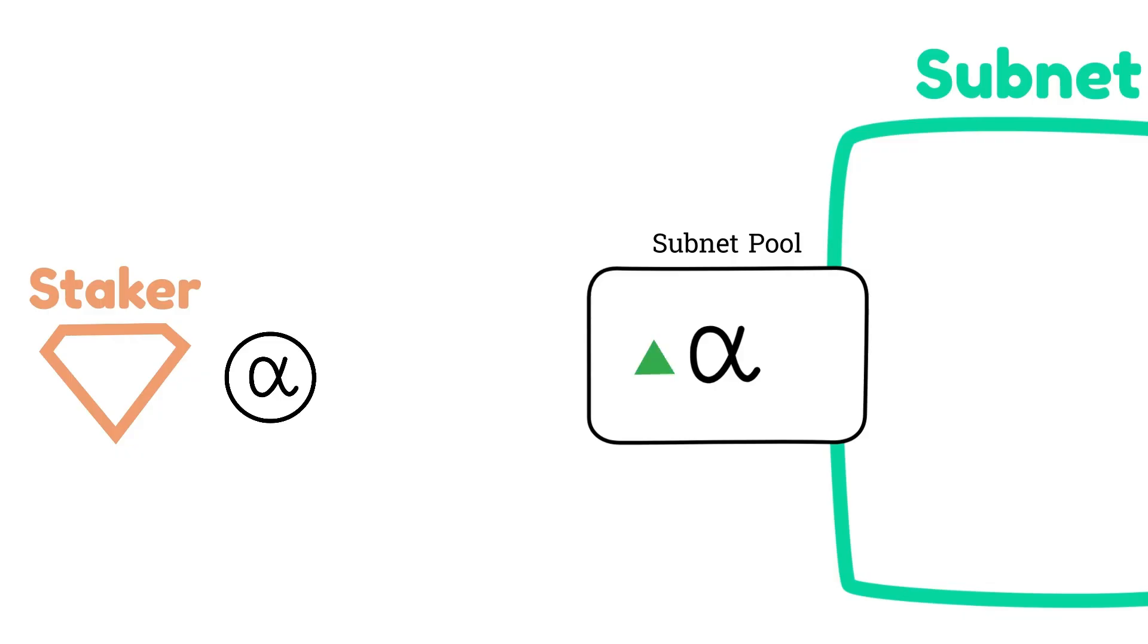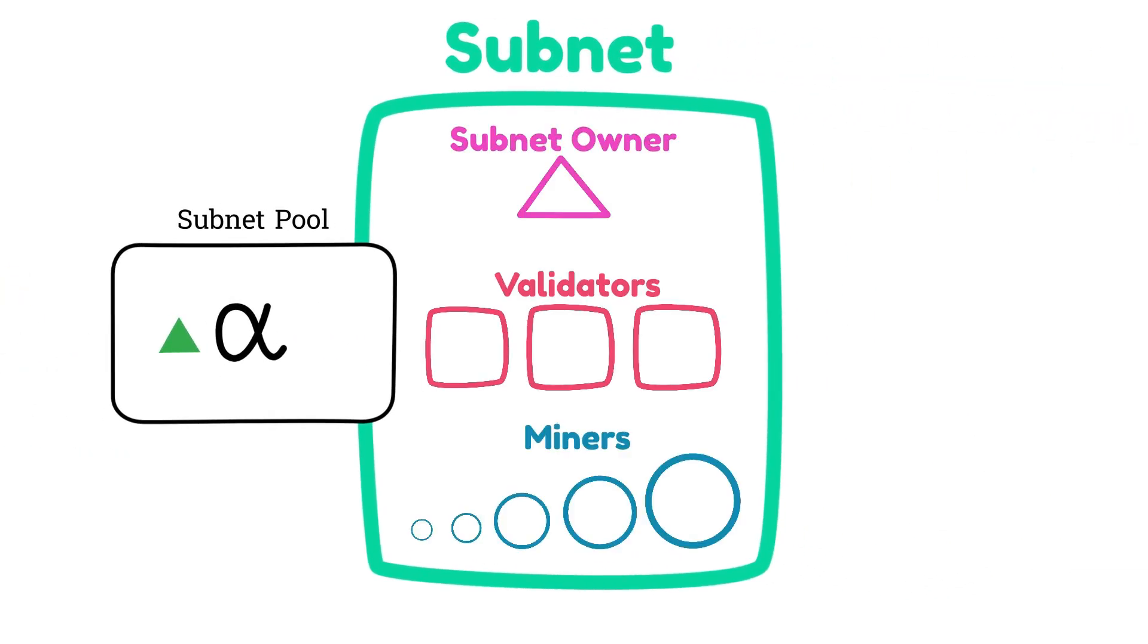Since miners, validators, subnet owners, and stakers are all paid in alpha tokens, when you buy an alpha token in a subnet and cause the alpha token's price to increase,